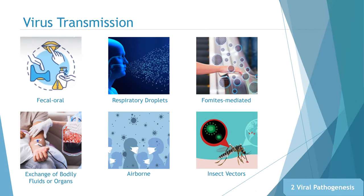Viruses are transmitted from person to person mainly through the following modes. Fecal-oral transmission occurs via the ingestion of contaminated food or water; the virus enters the body through epithelial cells or lymphoid tissue in the gastrointestinal tract. Respiratory transmission occurs when viruses in the respiratory tract are expelled as droplets, such as influenza viruses and the SARS and MERS coronaviruses. The transmission may be directly from one individual to another or may occur through fomites. Transmission via exchange of bodily fluids can result from blood transfusions, use of dirty needles, trauma, organ or tissue transplantation, sexual contact, or artificial insemination.